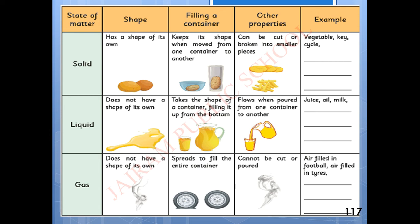Now, the states of matter are solid, liquid and gas. Let us identify their shape, whether it can be filled in a container and what are the other properties and some examples. For this, solid has a shape of its own. And when solid is kept in a bowl or a container, it does not change its shape. A solid can be cut or broken. Some examples are vegetable, key, cycle is given in your book and you can write some other examples too.